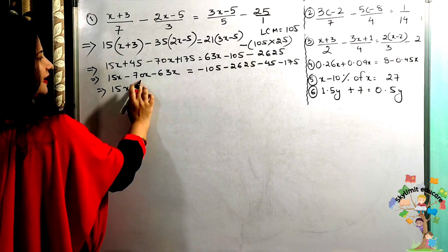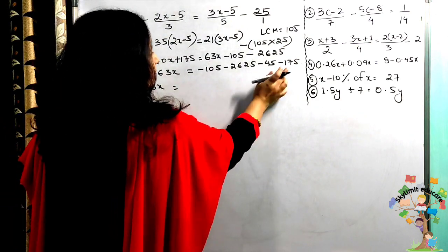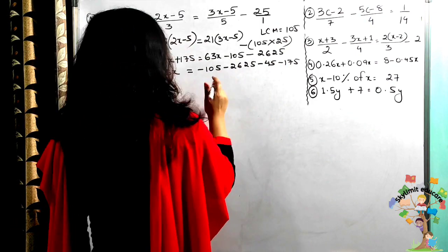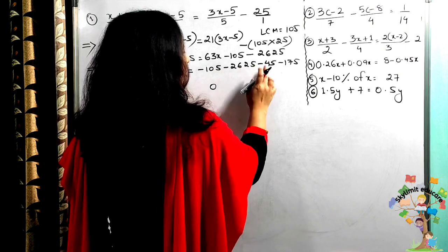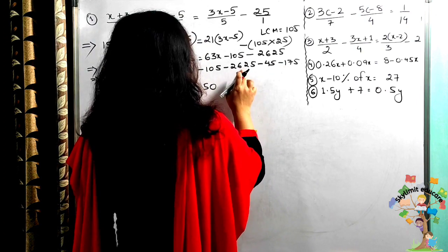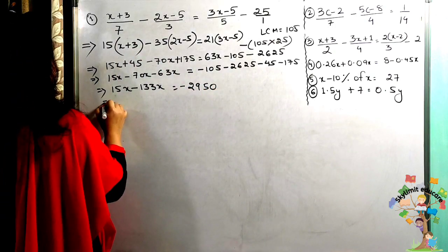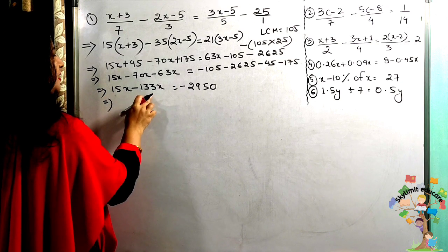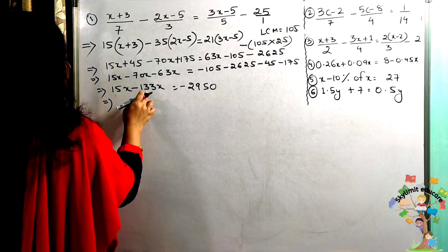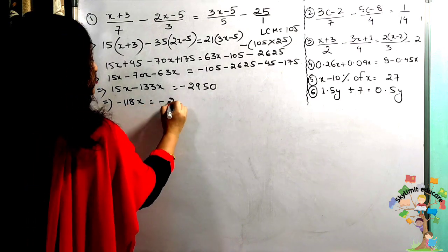So 15 − 70 − 63 gives me −118x. Adding the constants and giving a minus sign: −105 − 2625 − 45 − 175 = −2950. So −118x = −2950.